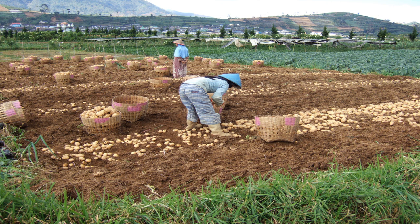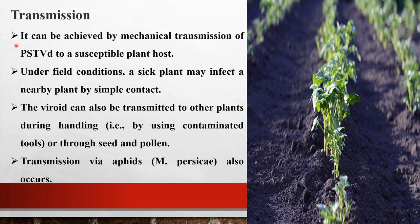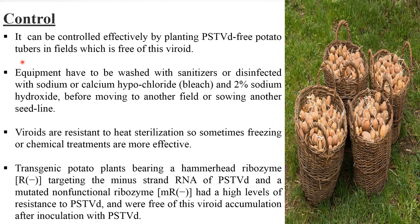Coming to transmission, it can be achieved by mechanical transmission of Potato Spindle Tuber Viroid to a susceptible plant host. Under field conditions, a sick plant may infect nearby plants by simple contact. The viroid can also be transmitted to other plants during handling — that is, by using contaminated tools, or through seed and pollen. Transmission via insect vectors may also occur.